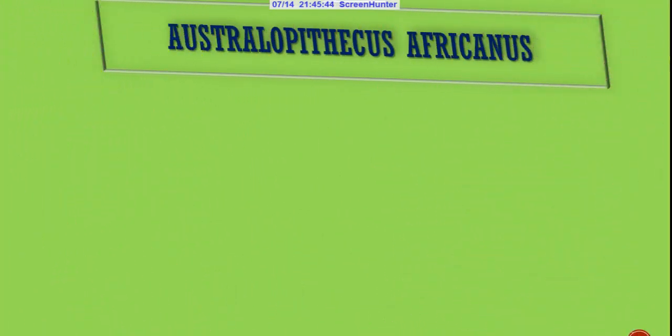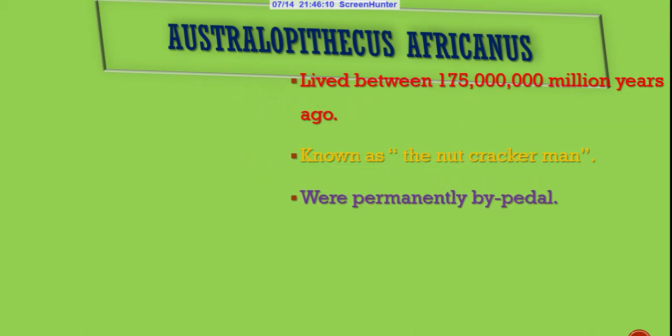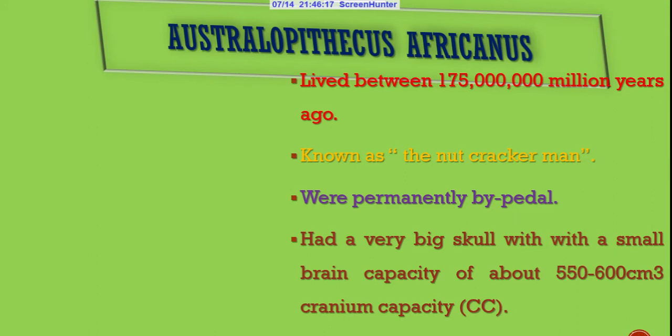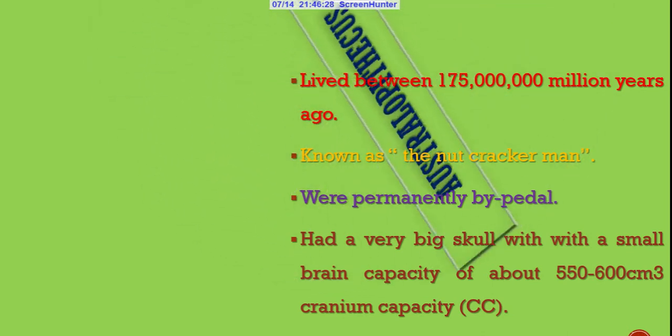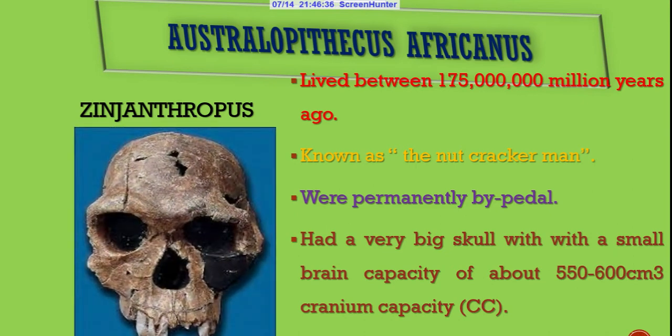The first stage of evolution is called Australopithecus africanus. At this stage, man lived between one to five million years ago. Man was known as the nutcracker during this stage and was bipedal. He had a very big skull with a small brain capacity of about 550 to 600 cubic centimeters. The weight of man was about 68 kilograms. The common name for man during this stage is Zinjanthropus.